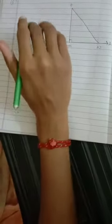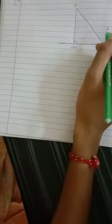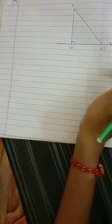Now, we will solve the sixth one. Sixth question is: show that all line segments drawn from a given point not on it, the perpendicular line segment is the shortest.